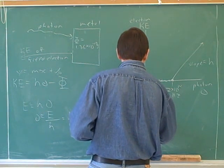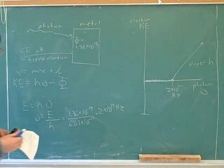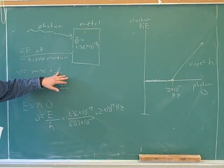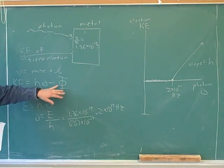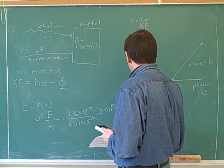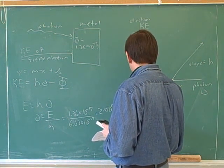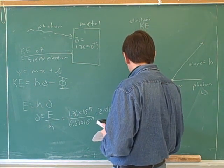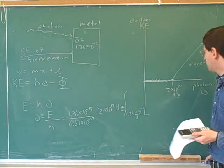You can figure out the y-intercept. Well, you can see the y-intercept must be this. The y-intercept must be the negative of the work function. So, here the y-intercept must be negative 1.36 times 10 to the negative 19 joules.